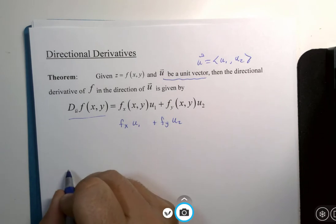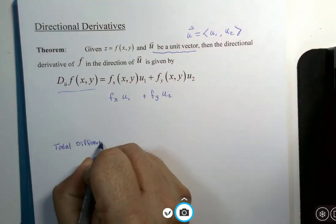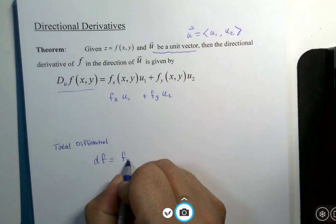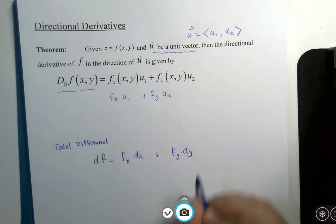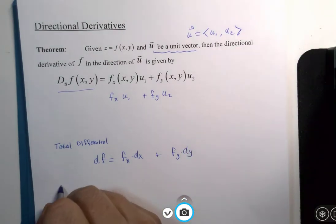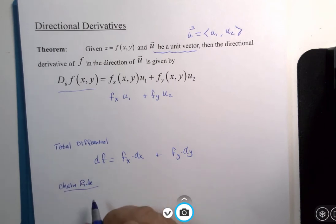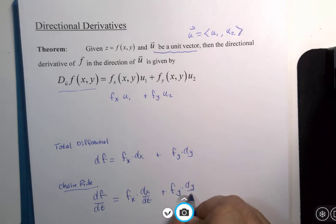So just from our past, we had something called the total differential where df equaled the x partial derivative times dx and the y partial derivative times dy. And we had one of our chain rules, well actually both of them, but we had a chain rule that said df dt for a single independent variable was the x partial derivative times dx dt and the y partial derivative multiplied by dy dt.